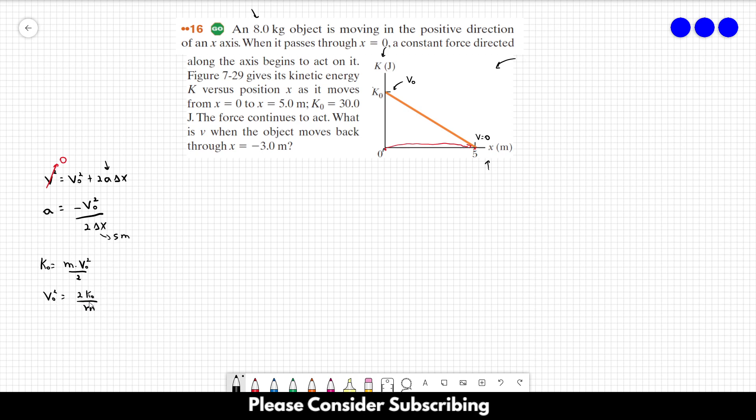So we can replace the value of V₀ squared by this. So we find that the acceleration is equal to minus 2 times K₀ over m divided by 2 times delta x.